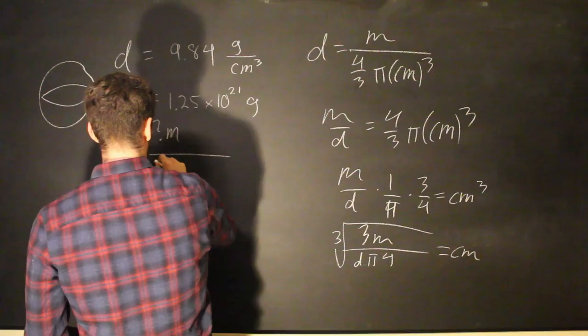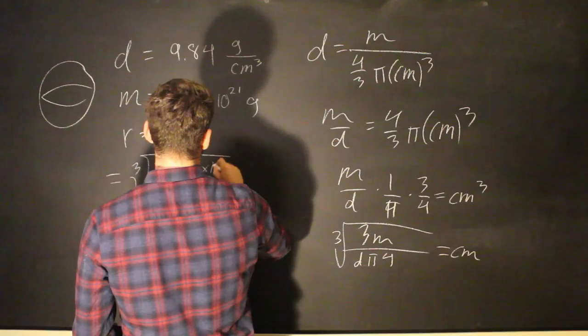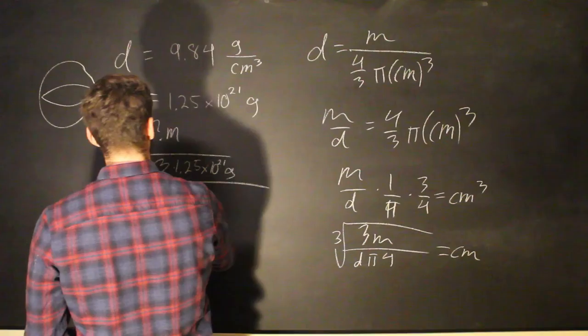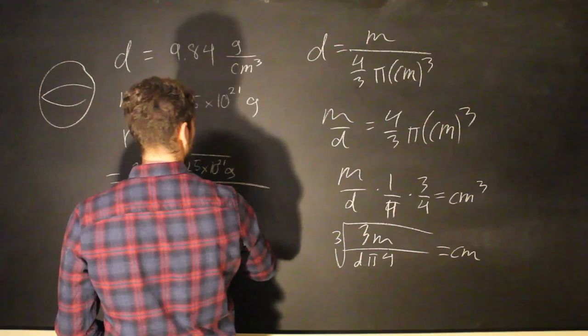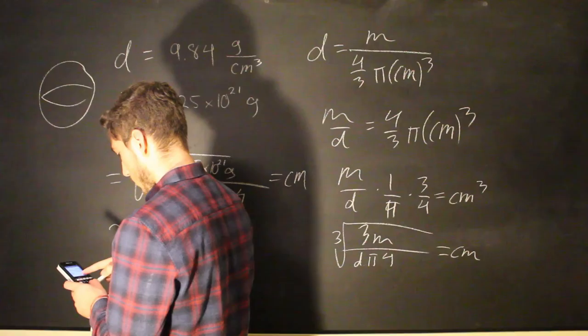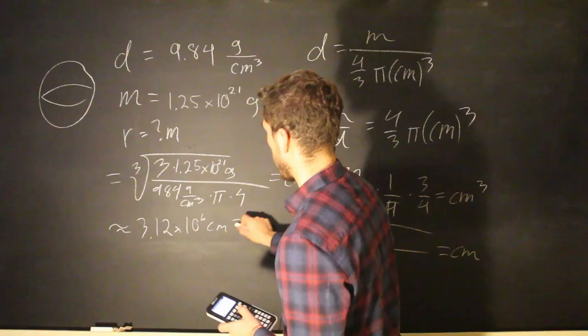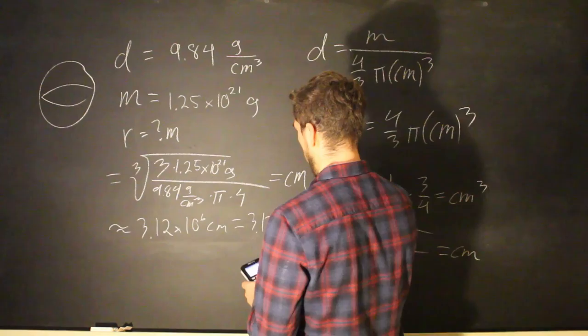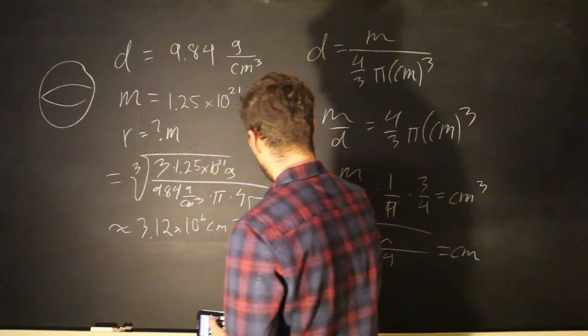Which means that the cube root of 3 times 1.25 times 10 to the 21 grams over 9.84 grams over centimeters cubed times pi times 4 is going to give us 3.12 times 10 to the 6 centimeters, which is actually just equal to 3.12 times 10 to the 4th meters, since a centi is 10 to the negative 2 meters. And there you have it. I hope this helped you out a little bit, and I'll see you when I make the next conceptual video. Thanks.